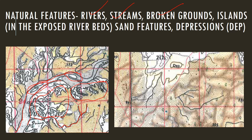Now let's look at sand features. One is depression — a depression hollow. When winds remove sand in a desert or arid area, they form a depression, called a depression hollow. Another sand feature is sand dunes, shown by brown-colored markings. Sand dunes are very common in desert areas and are natural features.